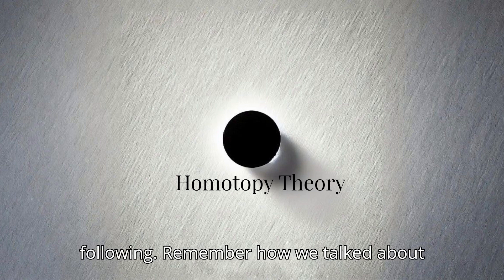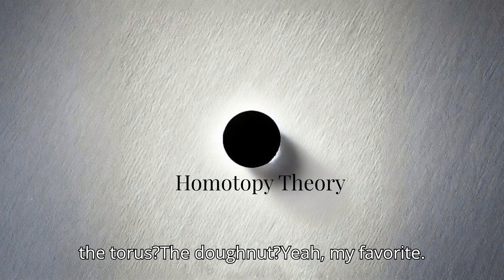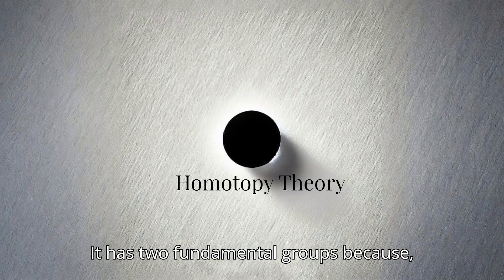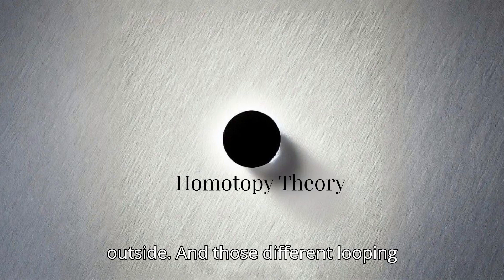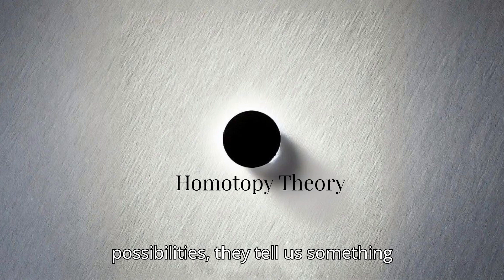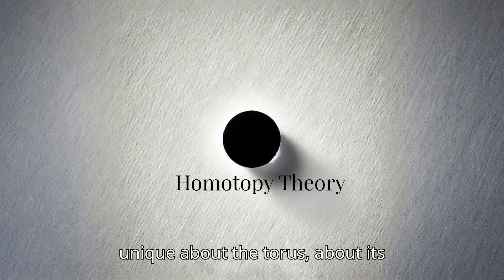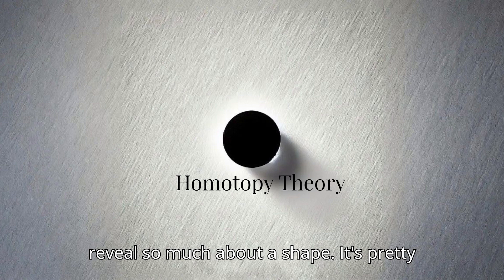Okay, I'm following. Remember how we talked about the torus, the donut? Yeah, my favorite. It has two fundamental groups because you can loop the string through the hole or you can wrap it around the outside. And those different looping possibilities, they tell us something unique about the torus, about its topology. It's amazing, right? Yeah. Something as simple as a string loop can reveal so much about a shape. It's pretty neat.